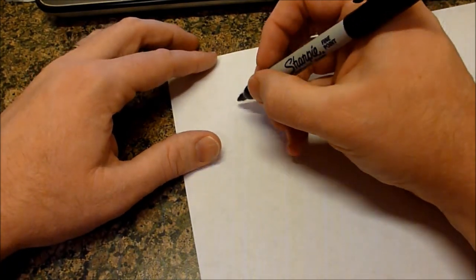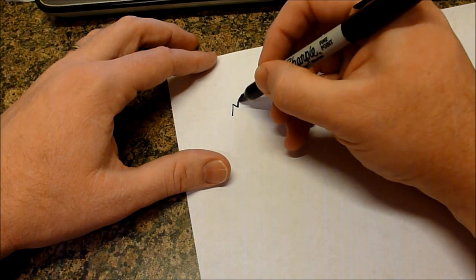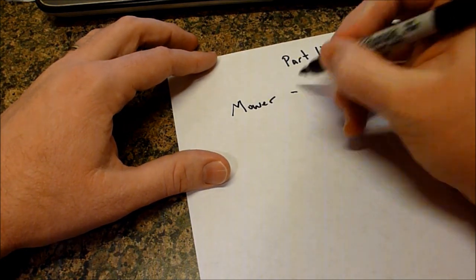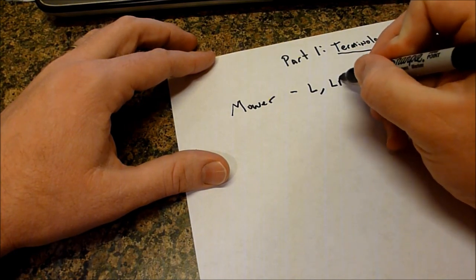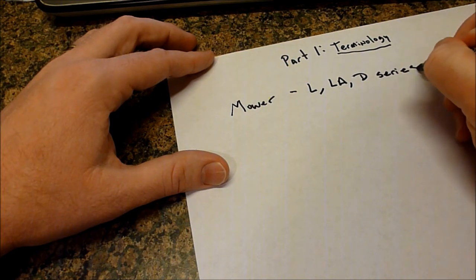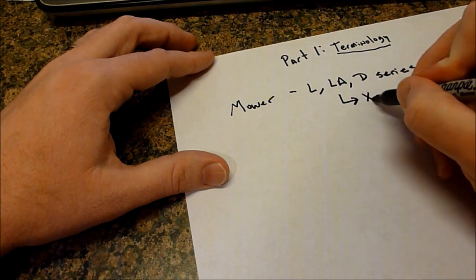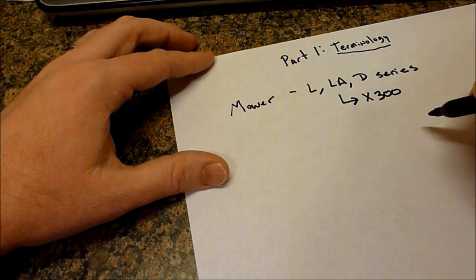I decided to do it this way instead of PowerPoint, mostly because that way I can write at the same time. I think it's really important that we understand the terminology of what we're doing. So we have a mower. Now a mower would be the equivalent to the L, LA, D series. This also might include some of the X300 series, kind of lower end models there.